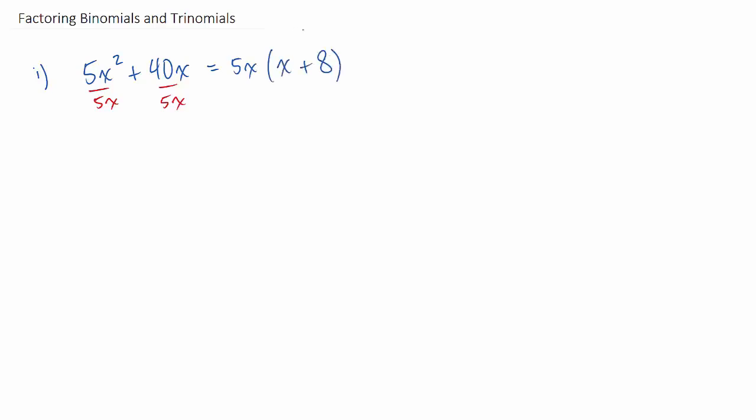It's sort of like distributing, but in reverse. It's like you're undistributing the binomial. It's called removing the GCF, the greatest common factor.